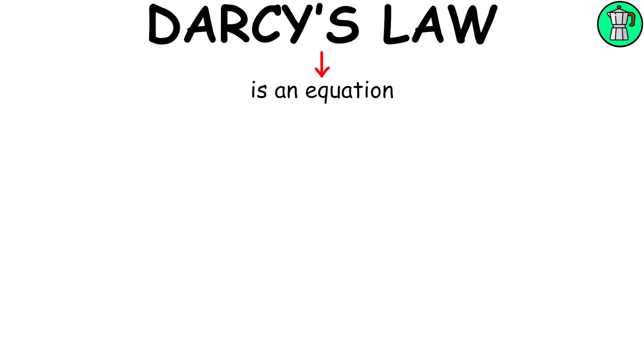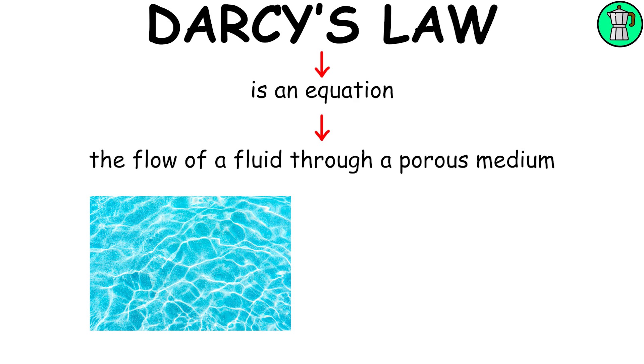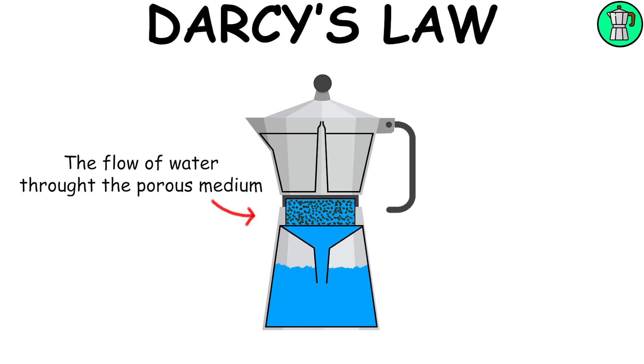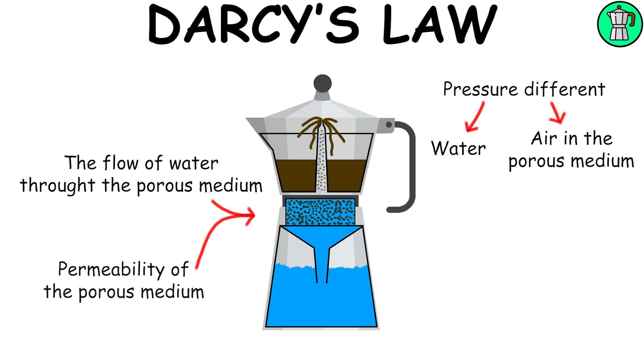Darcy's Law is an equation that describes the flow of a fluid through a porous medium. For example, ground coffee represents the porous medium, and hot water flowing through the coffee represents the fluid. According to Darcy's Law, the flow of water through the coffee will depend on the pressure difference between the hot water and the air in the coffee, the permeability of the coffee itself, and the viscosity of the water.